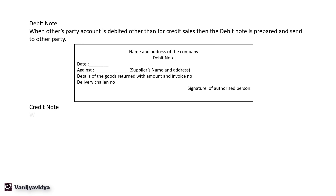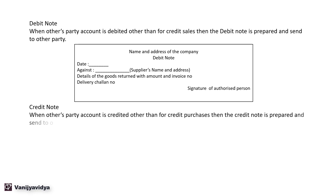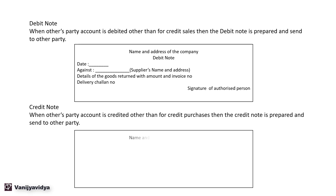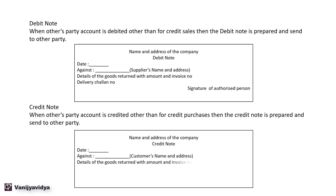A credit note is prepared and sent to the other party when their account is credited for a purpose other than credit purchases — it is the opposite of a debit note. The format of a credit note includes: name and address of the company, the heading 'Credit Note', date, the customer's name and address, details of goods returned with invoice number and amount, delivery challan number, and signature of authorized persons.